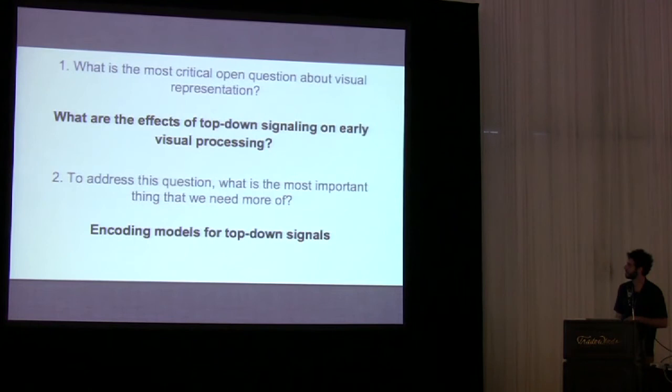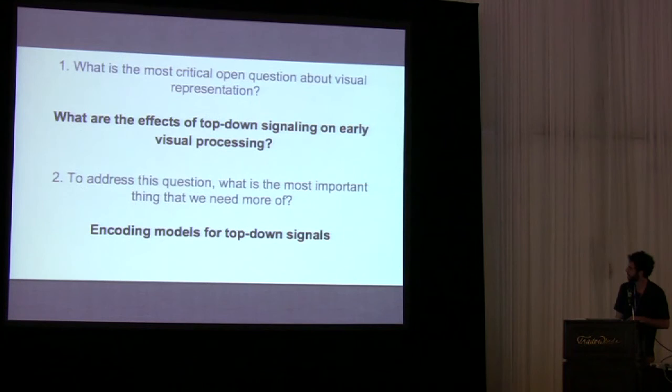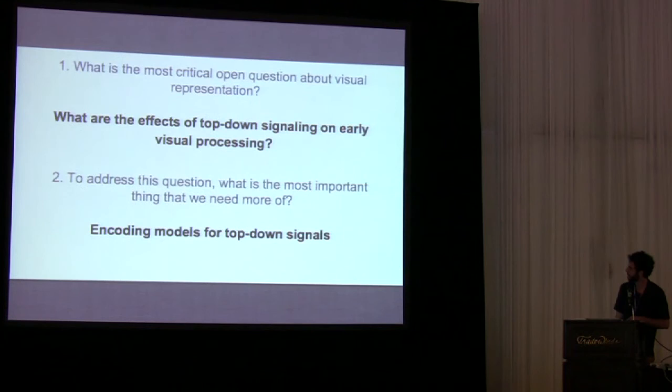That brings us to my answer to the discussion questions. I think the most important question to address — not surprisingly, exactly what I'm working on — is: what are the effects of top-down signaling on earlier visual processing? And not too surprisingly, I think the way to do this is to develop more encoding models. With that, I will thank my collaborators, particularly Cheryl Ullman and Camille Oogerbelle at the University of Minnesota, acknowledge my funding sources, and we'll move on. Thank you very much.